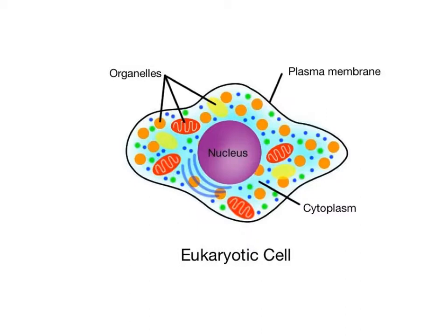Animal cells are eukaryotic cells, which means they are more complex cells that contain a true membrane-bound nucleus and a wide variety of cellular organelles.